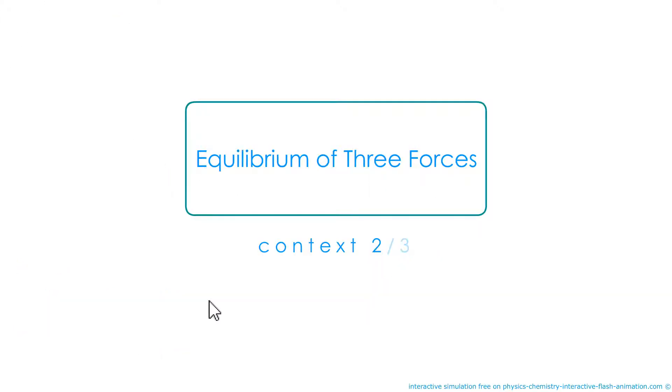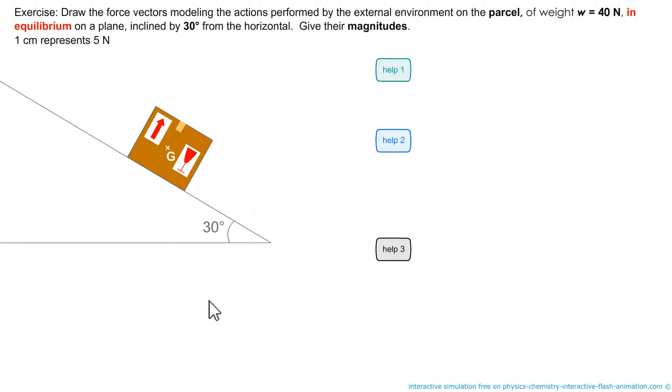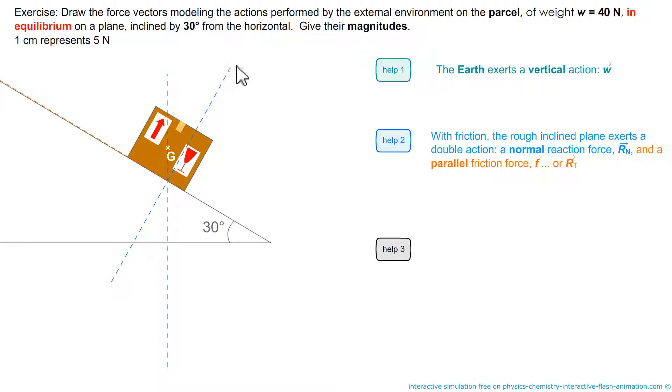Another example here with another solid body. It is a parcel that does not want to fall. He is in balance. I know its weight. And we are asked for the magnitudes. We are given the value of the angle, which is 30 degrees. So, it is the same. For the weight we know the line of action and we know the magnitude. The ground surface acts to prevent movement. Its action is exactly opposite to weight.